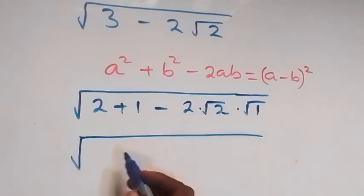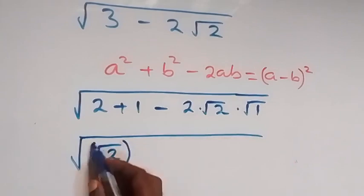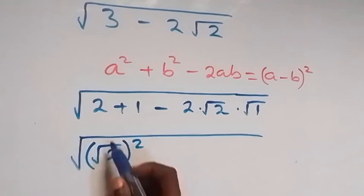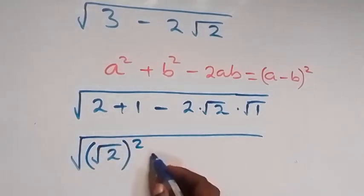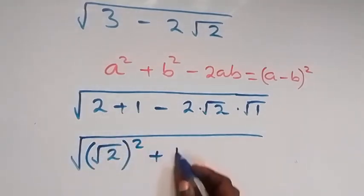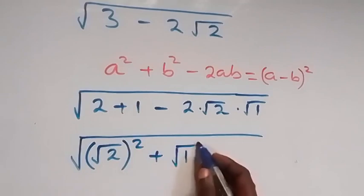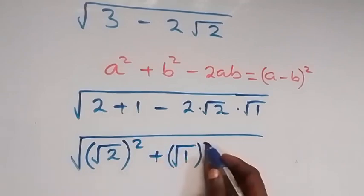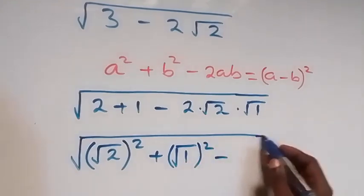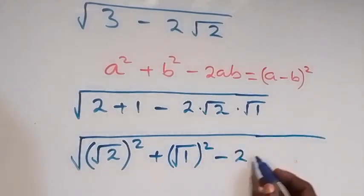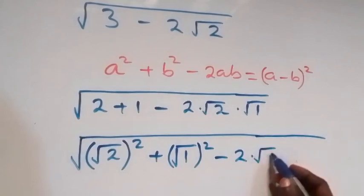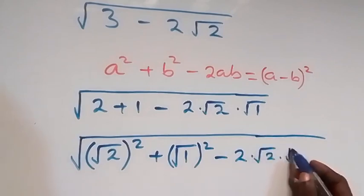root 2 times root 2, square when square times root this will still be 2, then plus also we can write this as root 1 squared, then minus here we have 2 times root 2 times root 1.